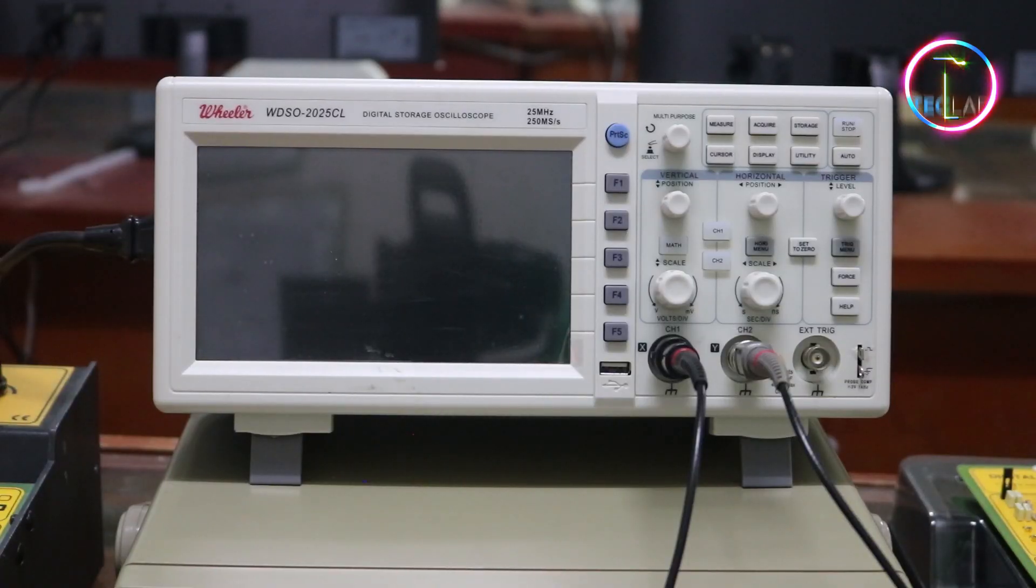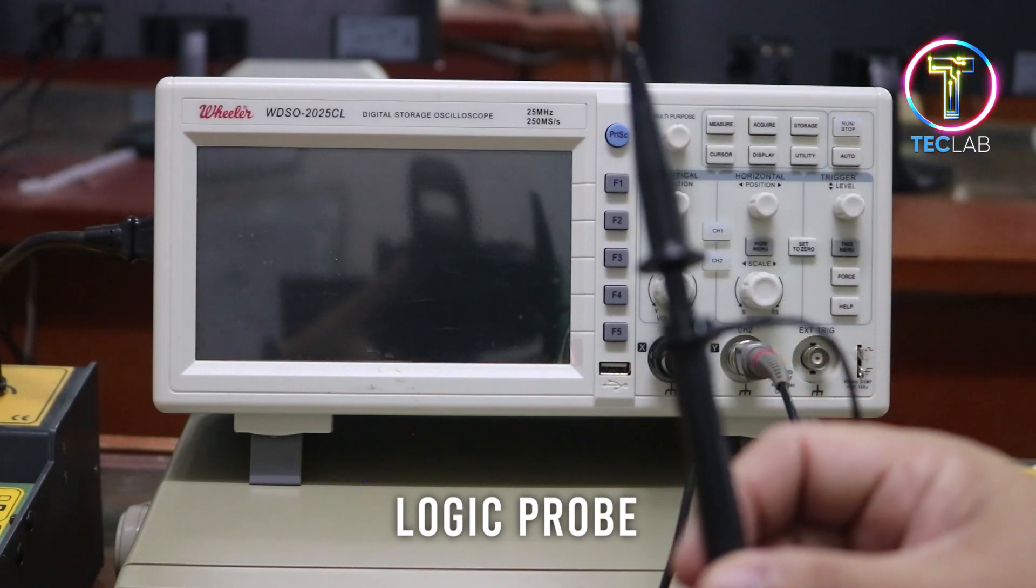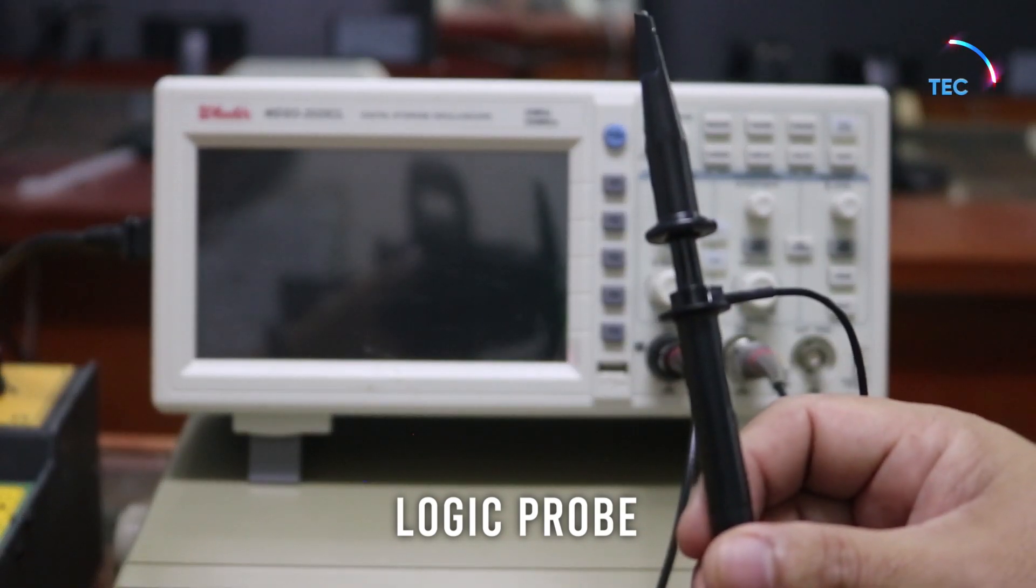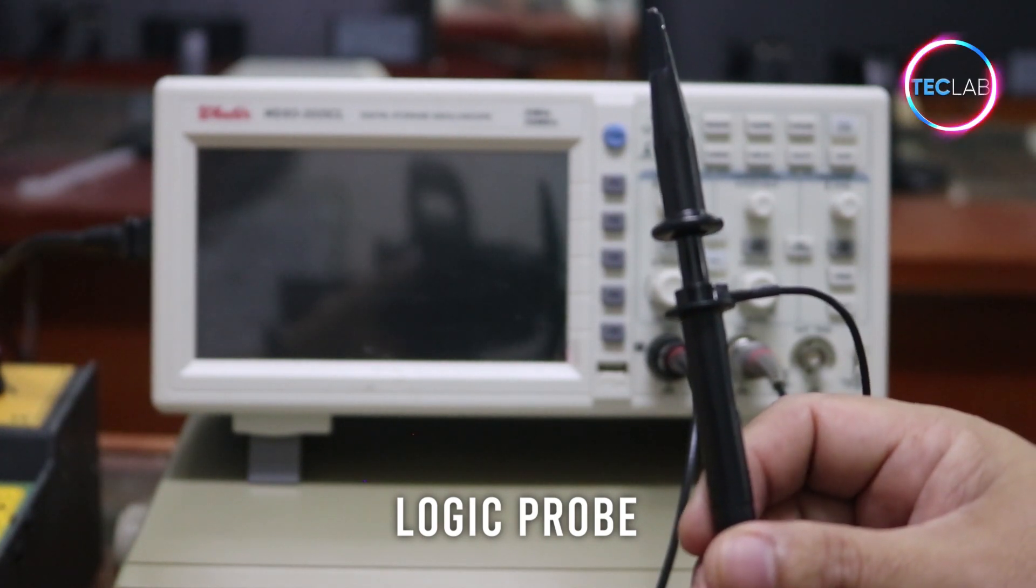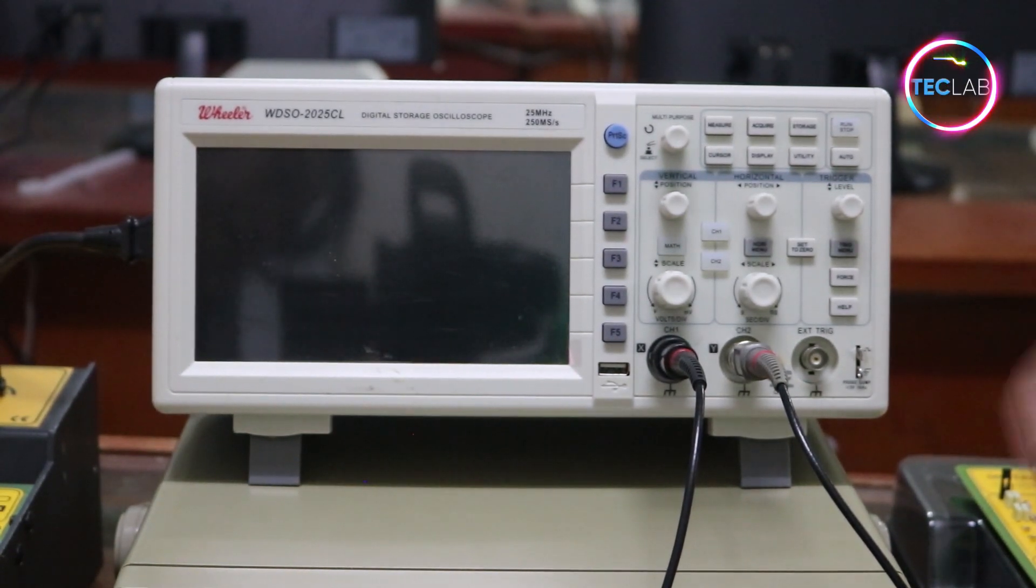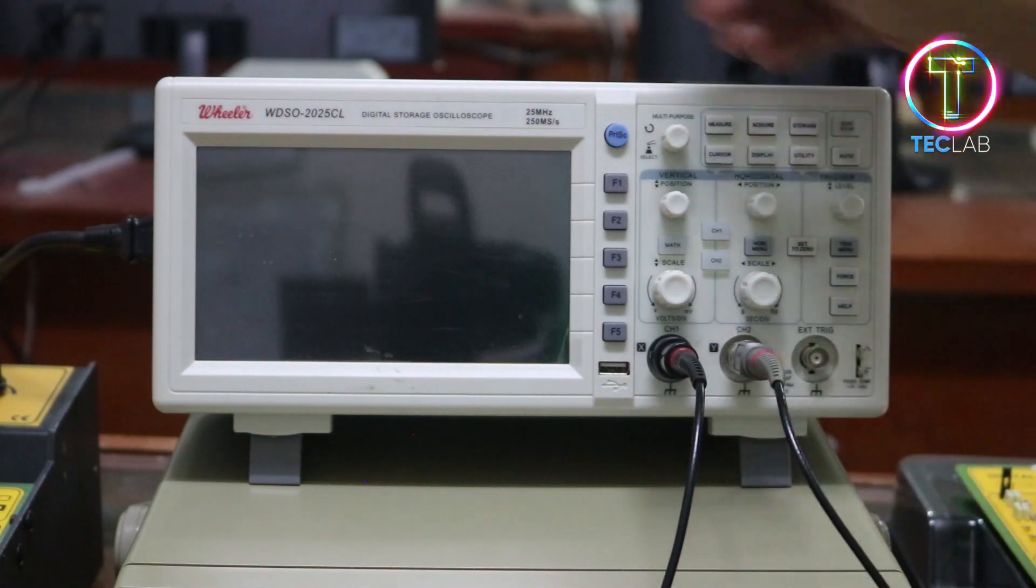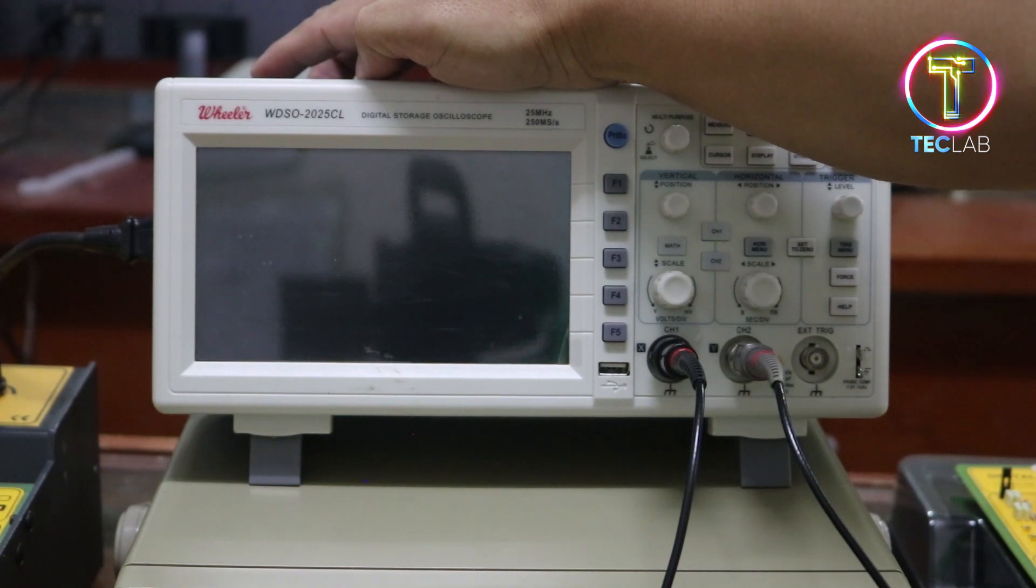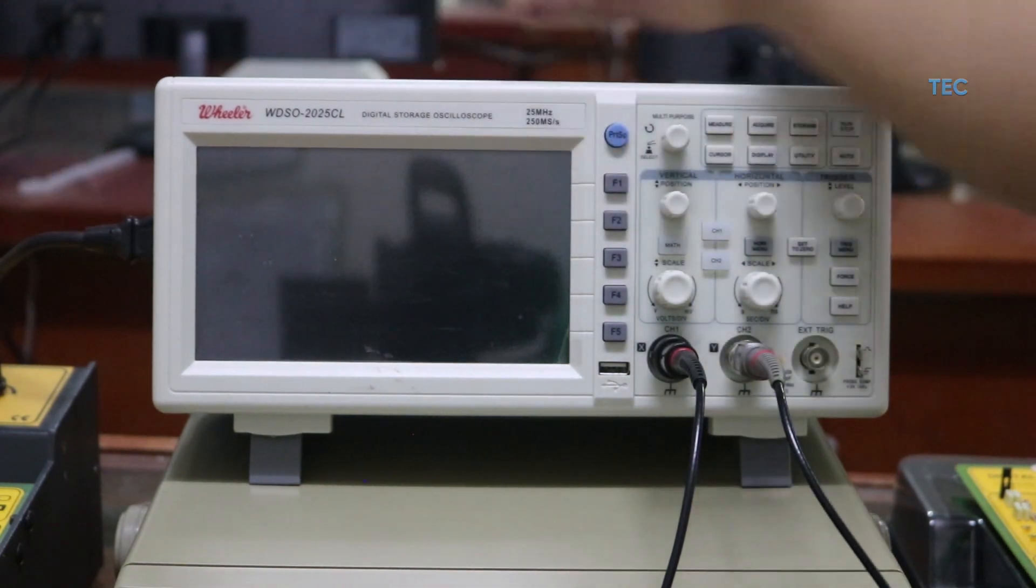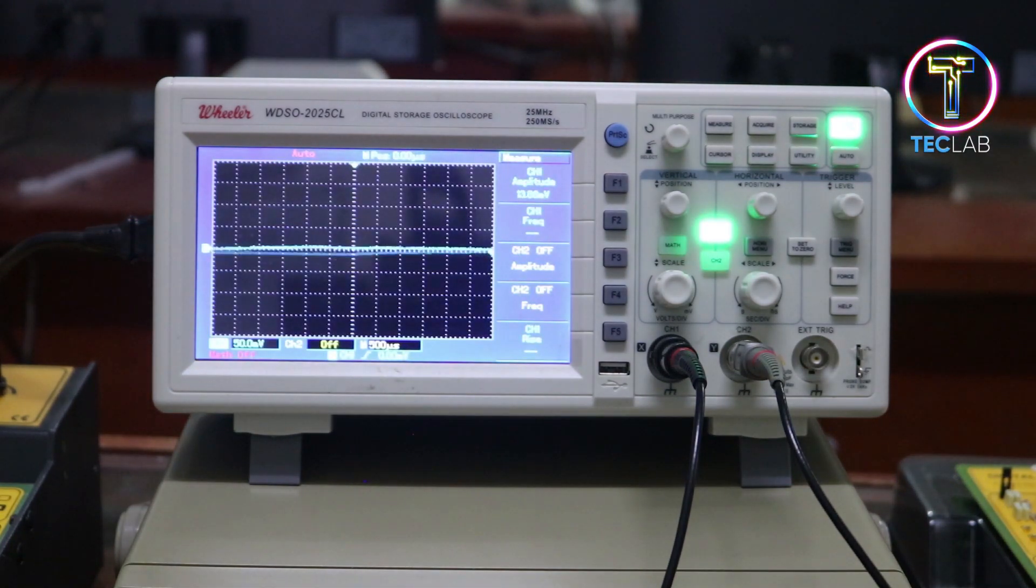In setting up an oscilloscope, make sure that you have this logic probe. This is the logic probe for channel 1, and you have another logic probe for channel 2. Secure the logic probe on the channel 1 and channel 2 slot. Then you're ready to go. Power up oscilloscope using this power button. This oscilloscope is Wheeler WDSO-2025CL model.